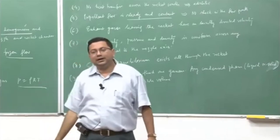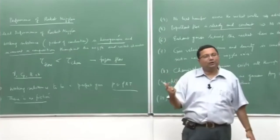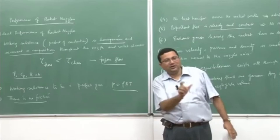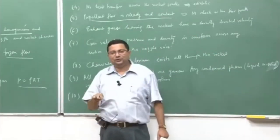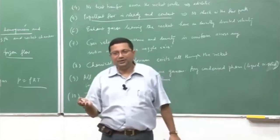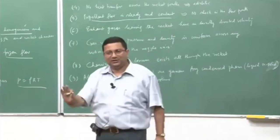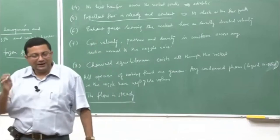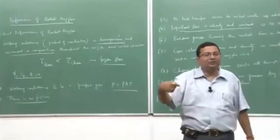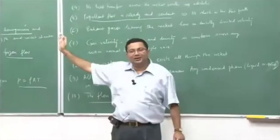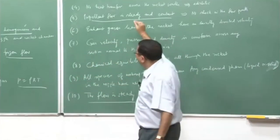The mass flow rate is a very important parameter in the thrust equation — the first term was ṁ·uₑ. Unless mass flow rate is constant, thrust will vary. All our flight mechanics and orbital mechanics derivations assumed constant thrust and constant mass flow rate. If mass flow rate starts to vary, we would need to redo the entire analysis, which we want to avoid. Therefore, constant propellant flow rate must be ensured.